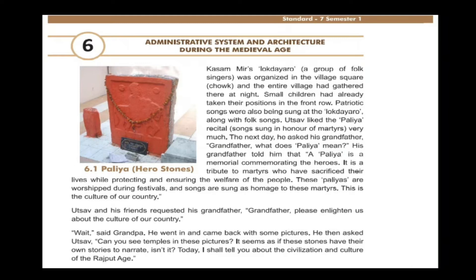There is a story given in the chapter. A small child is eager to know about the people and life in the medieval age. So a group of folk singers called 'Kutumb Meets' was organized in the village square, and the entire village had gathered there at night. Children had already taken their position in the front row.